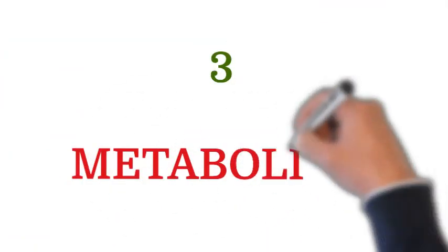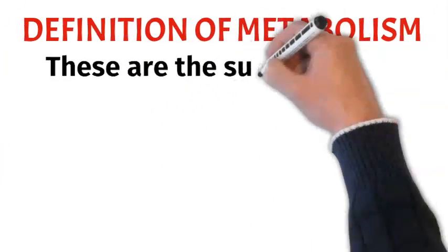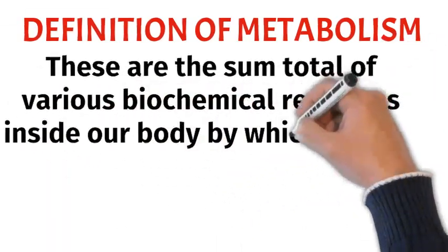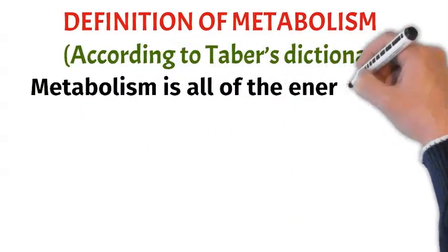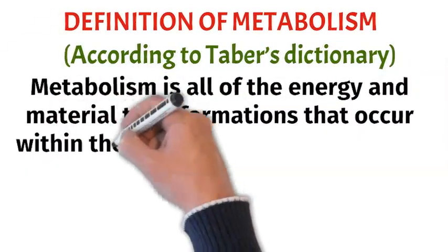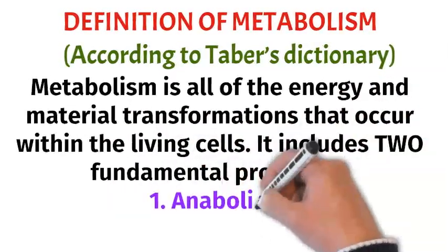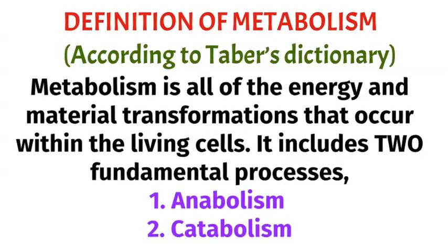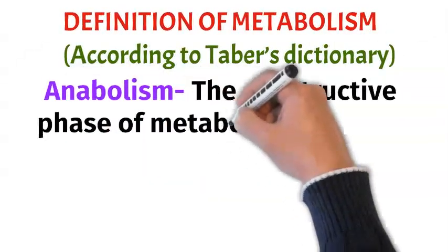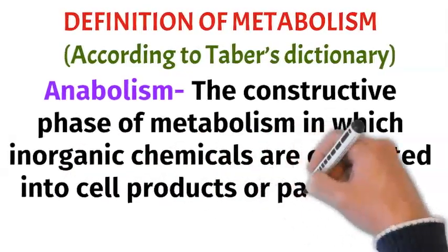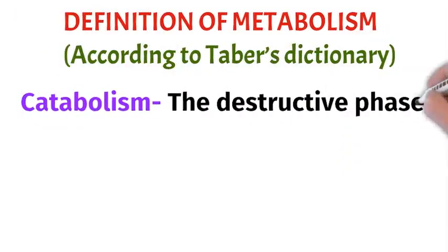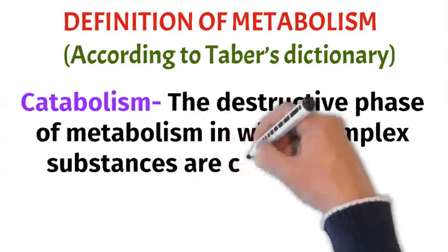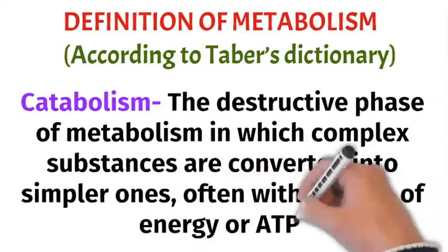Now the third characteristic of a living organism is metabolism. These are the sum total of various biochemical reactions inside our body by which various chemicals are formed and changed into various biomolecules. According to Taber's dictionary, metabolism is all of the energy and material transformations that occur within living cells. It includes two fundamental processes: anabolism and catabolism. Anabolism is the constructive phase of metabolism in which inorganic chemicals are converted into cell products or parts of living cells. Catabolism is the destructive phase in which complex substances are converted into simpler ones, often with the release of energy or ATP.